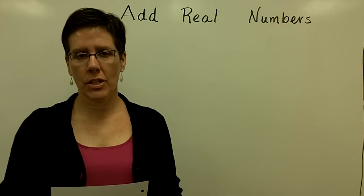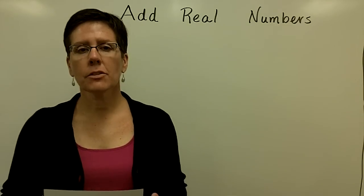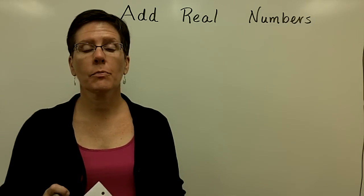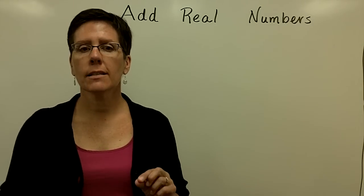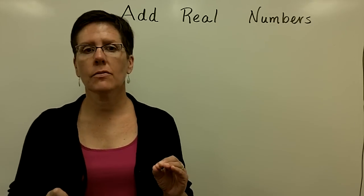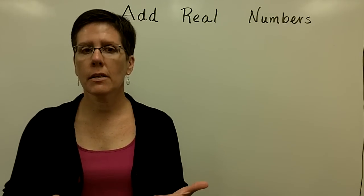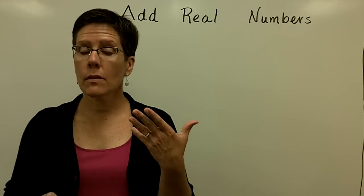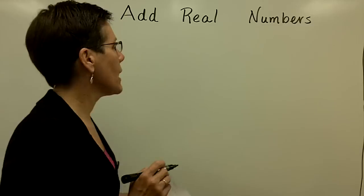Let's put negative signs into the picture along with positive numbers that we're used to. I'd like to focus first on adding real numbers. I'm going to concentrate on adding two real numbers that have like signs. That phrase, like signs, is very, very important. We can do this visually via a number line, but I'm going to try to go directly to the quick method of adding two numbers with like signs.